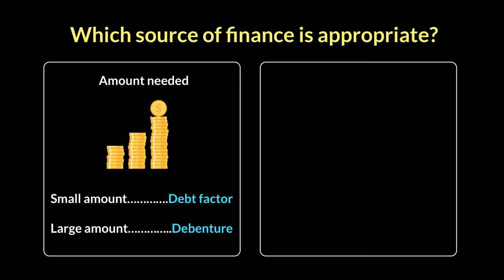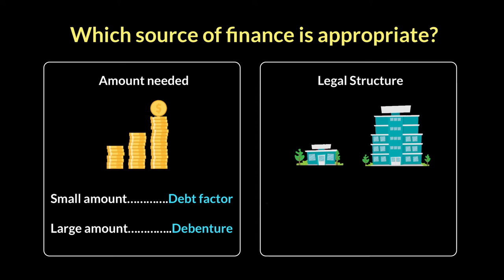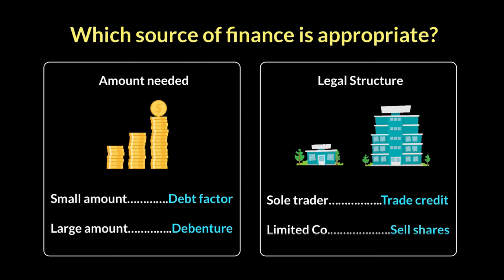Number four is the legal structure that a company may have — meaning being a sole trader, partnership, or a public company. Smaller businesses have fewer sources of finance available to them, and larger businesses will have more. So legal structure itself will determine if certain sources are actually available to you. If you're a sole trader, maybe asking your suppliers for a little credit and a grace period is more advisable. If you are a limited company, then selling shares is a viable option, especially when you want to raise large sums in one go.